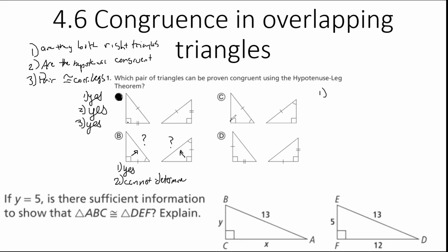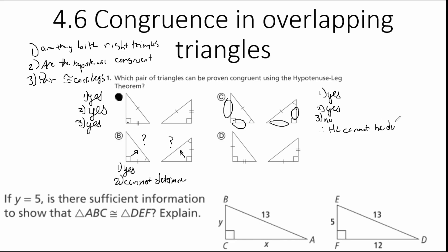For choice C: question one, are they both right triangles? Yes and yes. Question two, are the hypotenuses congruent? Yes and yes. Last but not least, is there a pair of corresponding congruent legs? I don't know anything about any of these legs, so no. Therefore, HL cannot be determined. I've now answered all three questions and the answer is no because I don't have that third step — a pair of congruent corresponding legs.